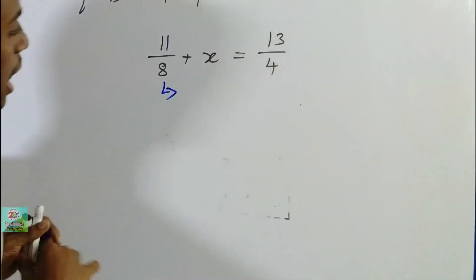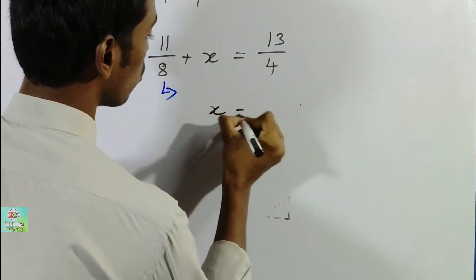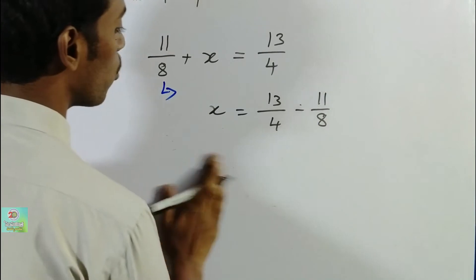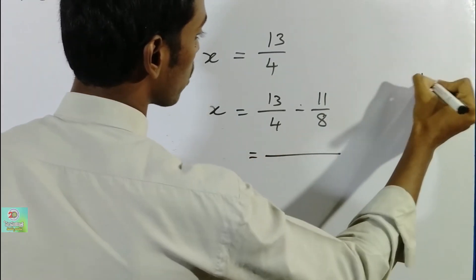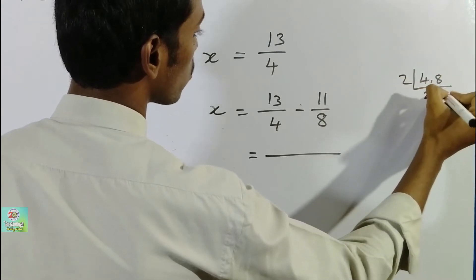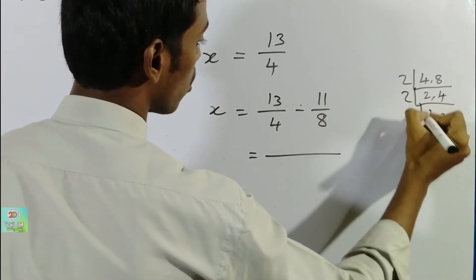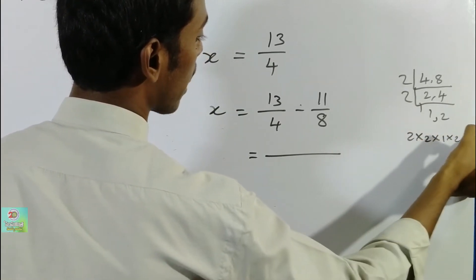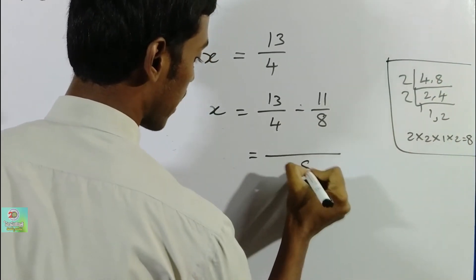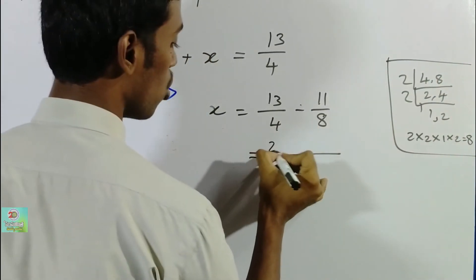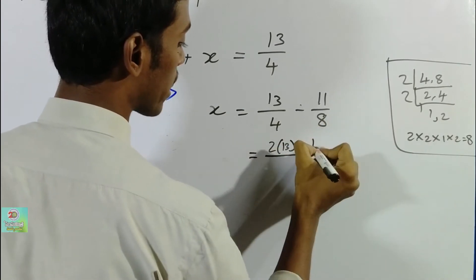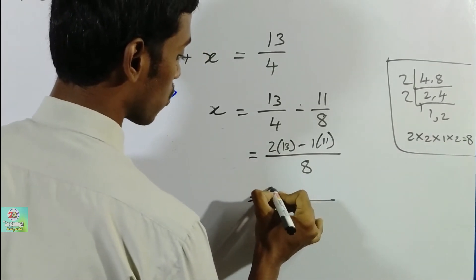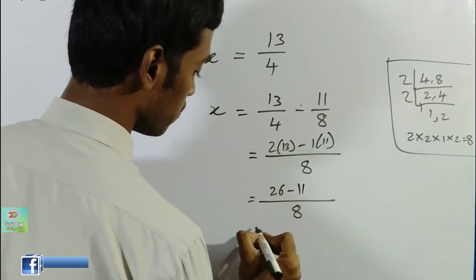X is equal to 13/4 minus 11/8. Now what we are doing — we find the LCM of 4 and 8. The LCM is 8. Four goes into 8 two times, so two times 13 is 26. Eight goes into 8 one time, so one times 11 is 11. The denominator is 8. So we get 26 minus 11 over 8.